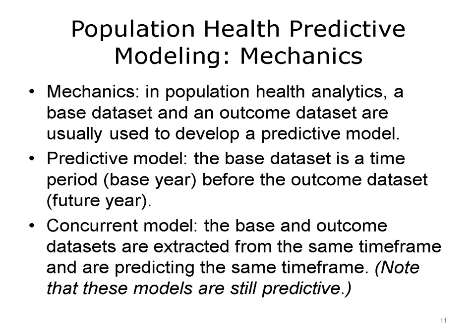In population health analytics, a base data set and an outcome data set are usually used to develop a predictive model. Often, the base data set is a time period — the base year — before the outcome data set, which is the future year. The models produced through this approach are often called predictive. Sometimes, base and outcome data sets are extracted from the same time frame; these models are sometimes referred to as concurrent models, as they are predicting the same time frame. The main reason for setting aside an entire year of data for the base and another year for the outcome is due to the common use of claims data for population health modeling. As other data sources become more mainstream, the use of different time frames, such as one month, three months, and six months, are also becoming acceptable.